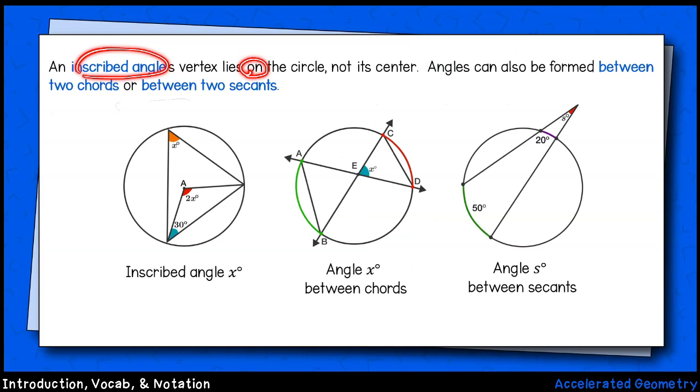An inscribed angle is one in which the vertex lies on the circle, not on its center. There are many ways to generate inscribed angles, or combinations of central and inscribed angles, a few of which are pictured here. For example, the angle indicated in orange is an inscribed angle with a measure x degrees. On the other hand, the angle labeled in red is a central angle with its vertex on the center of the circle, point A. Its measure is 2x degrees.